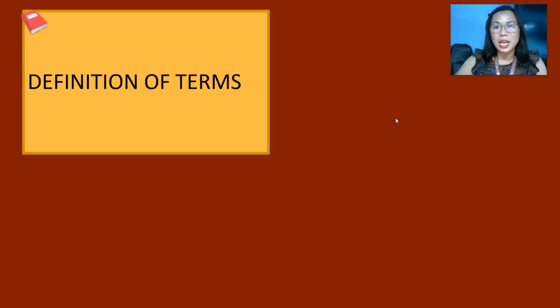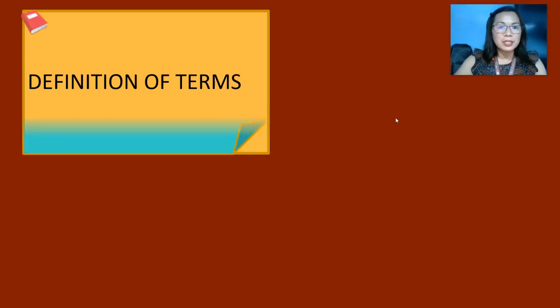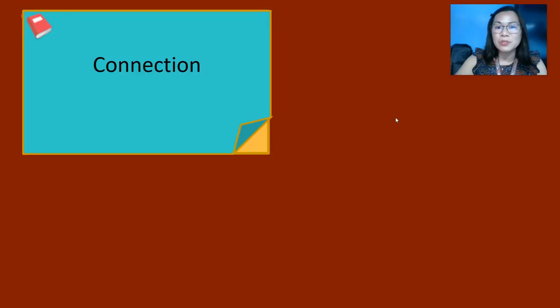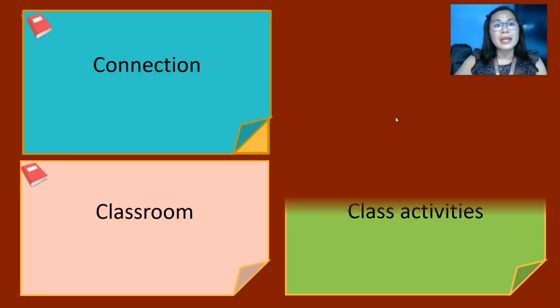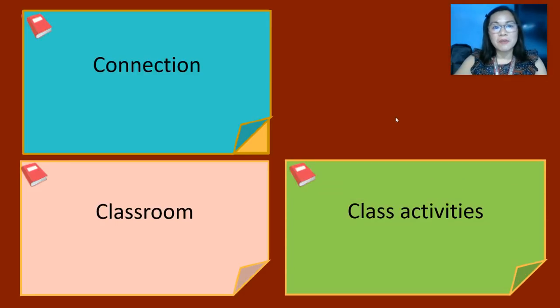Third, the guiding points for us to live by when handling class online, and lastly, sharing of our own challenges as online teachers. Some key terms will be used throughout the lecture. The first is 'connection' — it refers to how well we are able to encourage students to participate. 'Classroom' refers to the online classroom, and 'class activities' refer to possible significant and engaging tasks of students in the online learning.